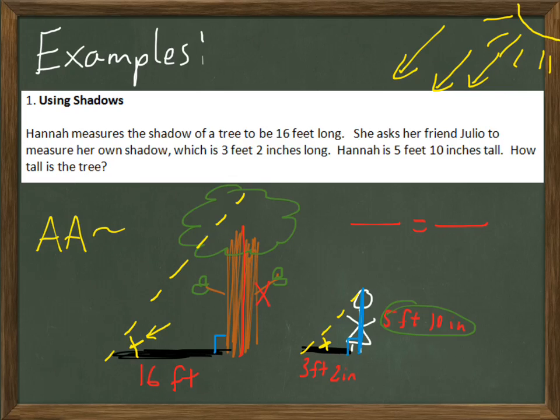There are 12 inches to a foot, so 5 feet is 60 inches. Then we have another 10 inches on top of that, so that would be 70 inches. Applying the same thing to 3 feet 2 inches, 3 feet would be 36 inches. Add another 2, and this becomes 38 inches. I also have to convert the 16 feet into inches. Multiplying that by 12, I get 192 inches.